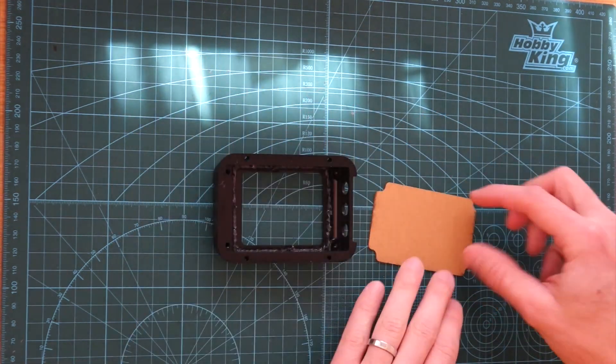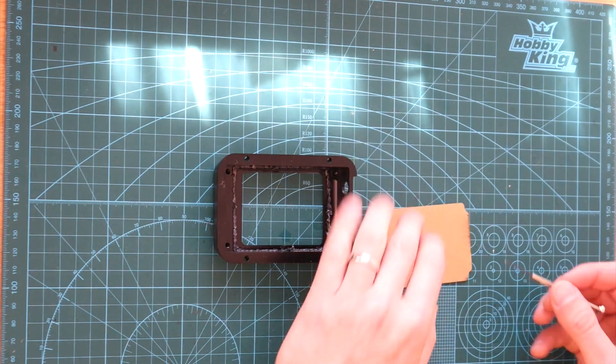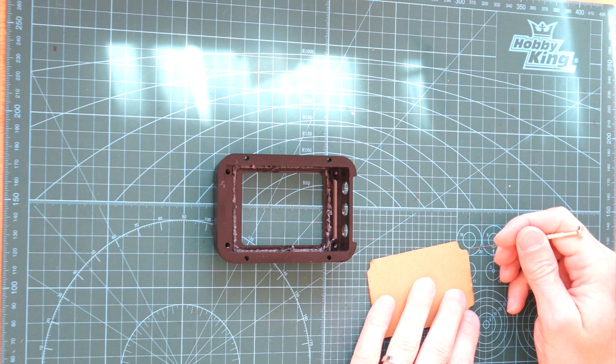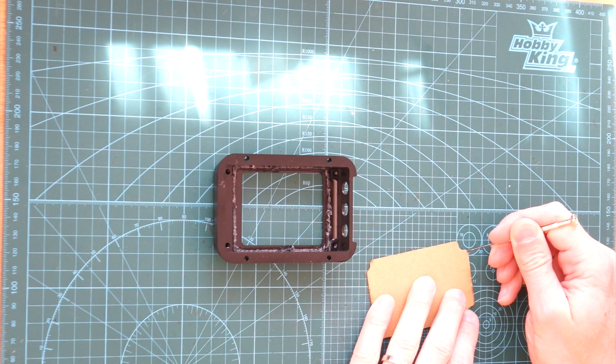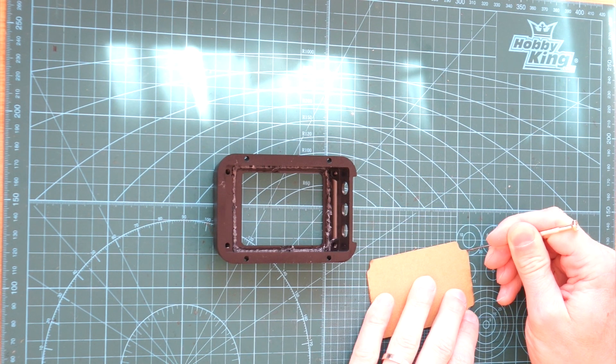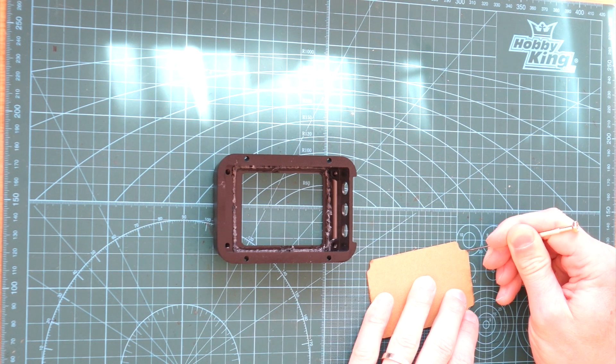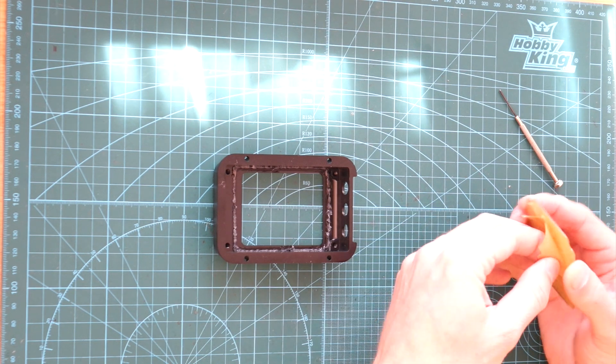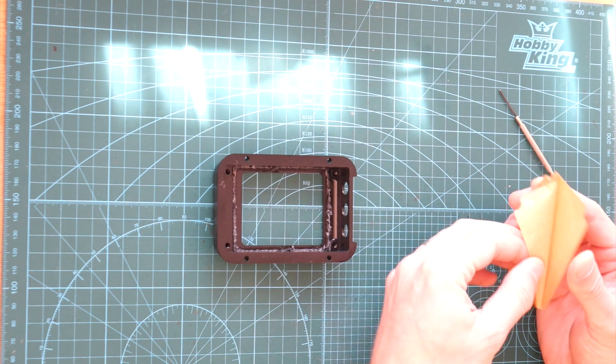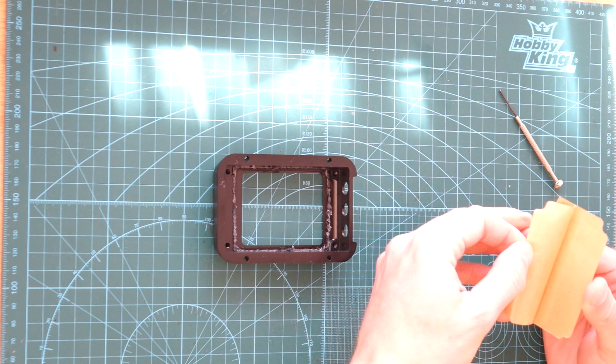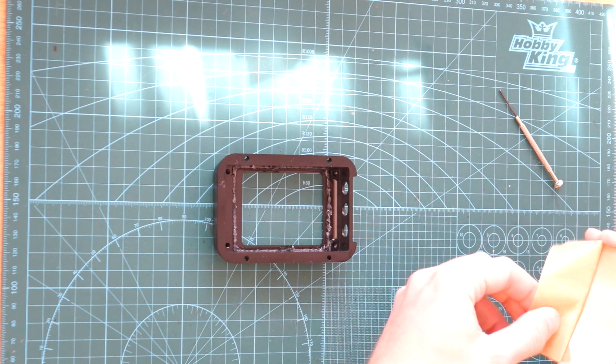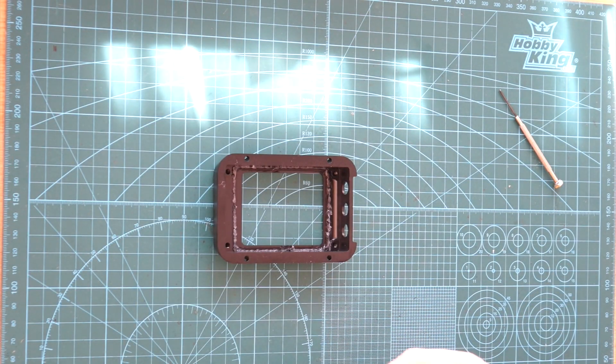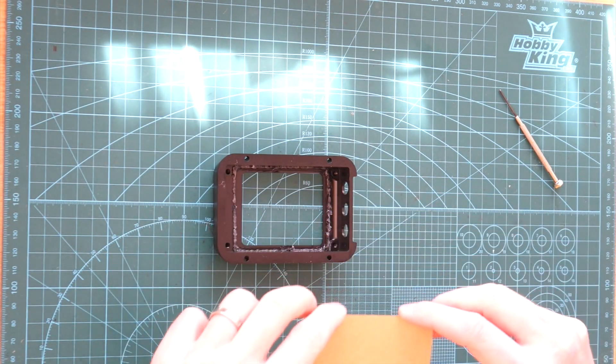So next we want to peel off the protective paper from the glass. So I use this small screwdriver to get it started. And I only take it off one side when installing. That's because I don't want to damage it when installing the buttons. So I'll remove the other side later.